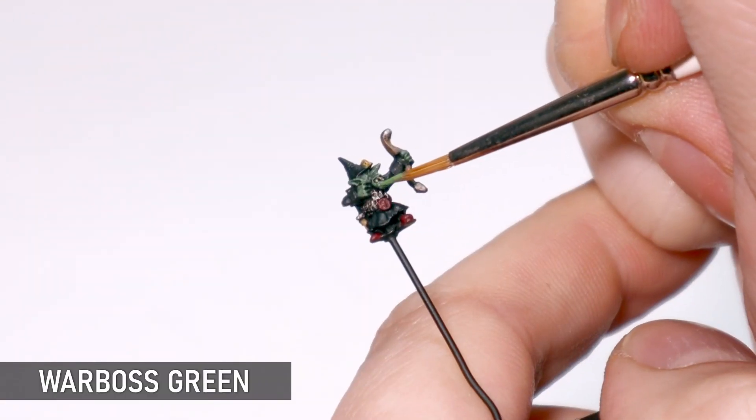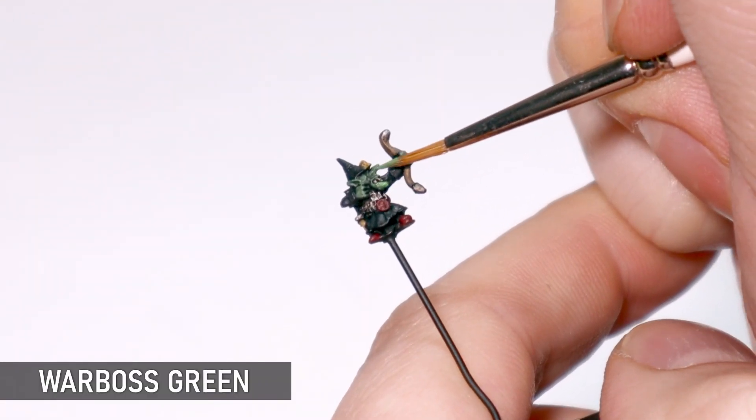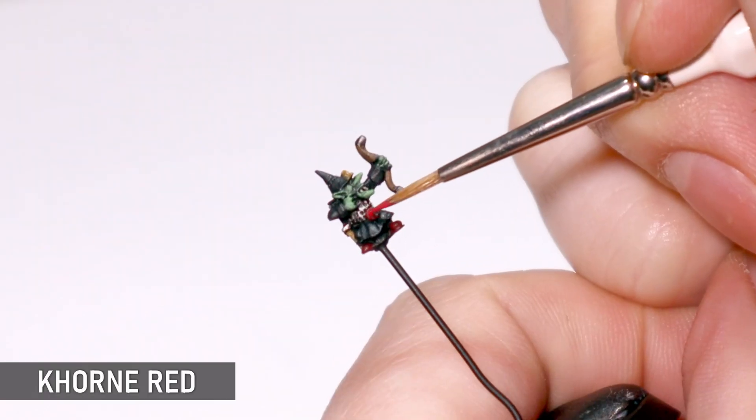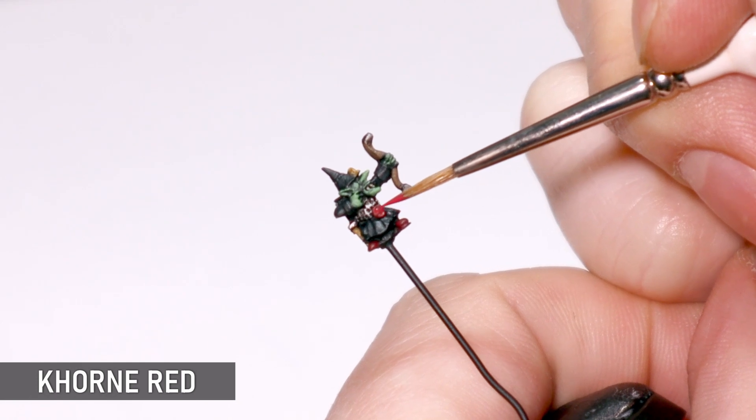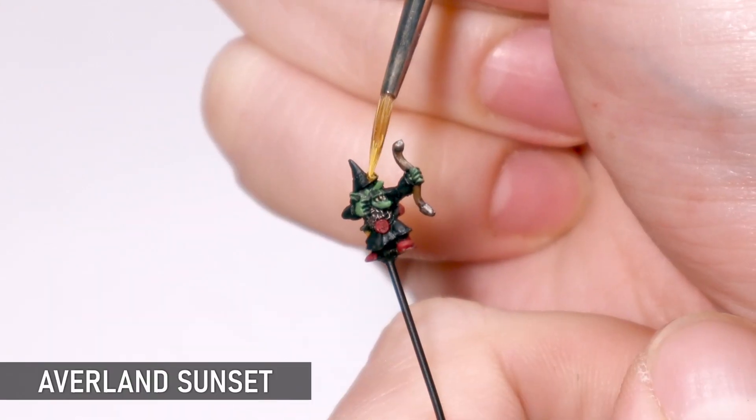I'm going back now the wash is dry with each of the base colors and just giving them all a touch up while leaving that shading from the Nuln Oil. This is also going to bring back a little bit of the vibrancy of these colors and neaten up any areas where the wash shouldn't have settled.